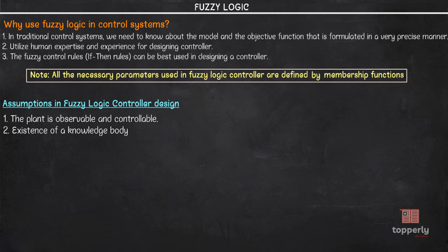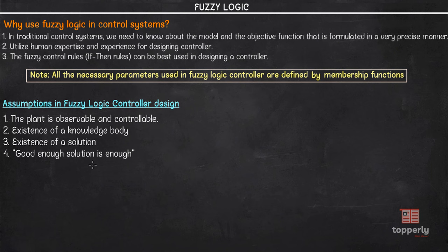The third assumption is that a solution exists. It's important that a solution should exist and it should be a good enough solution. The control engineer must look for a solution that is good enough, not an optimum one. This is because in fuzzy logic we do not have any fixed or set boundaries, and therefore we do not require an optimum solution — a good enough solution suffices.